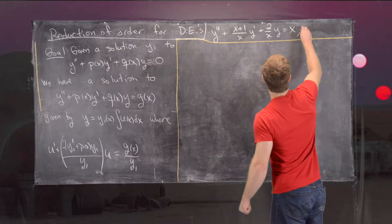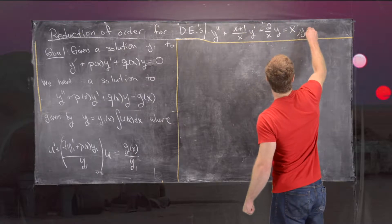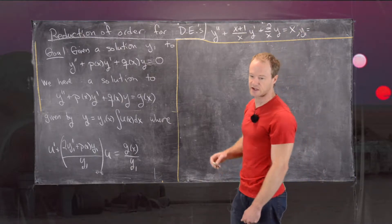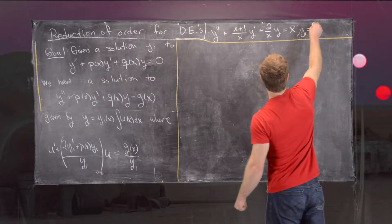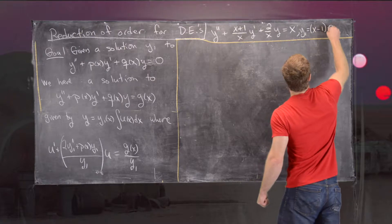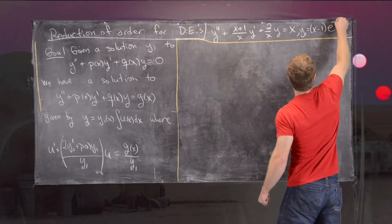In this case, y1 is (x minus 1) times e to the minus x.